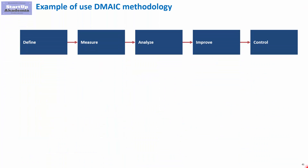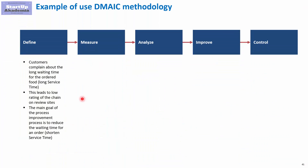In the first stage we define the problem: customers are complaining about the long waiting time for the food they have ordered — in other words, long service time. This is a source of bad reviews and due to that the chain is losing a lot of money. So what we want to improve is to reduce the waiting time.